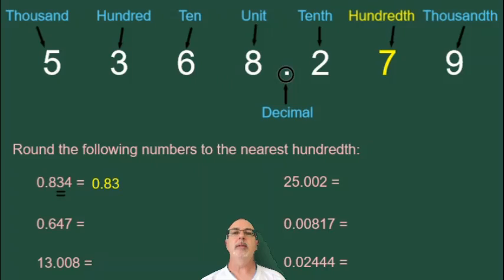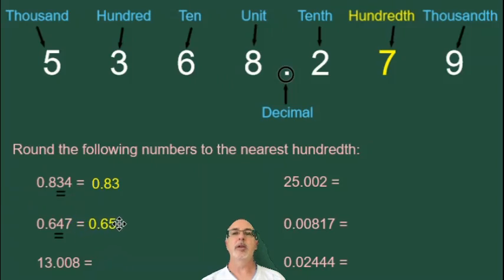Now we have 0.647. The 4 is in the hundredth position, and the number to the right of it is a 7, which is bigger than 4, so we're rounding up. We have 0.65 as our answer.